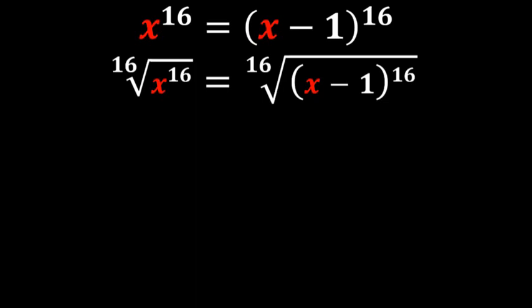So what's going to happen here is our 16ths are going to cancel on both sides, leaving us with x is equal to plus or minus (x minus 1).